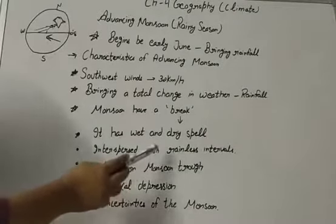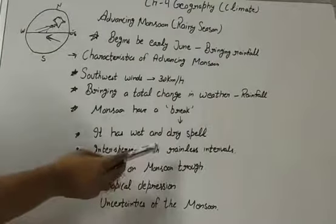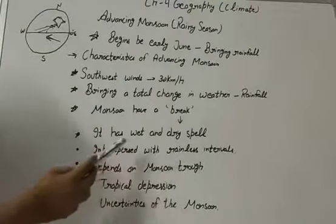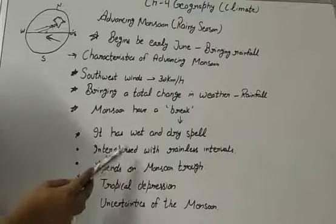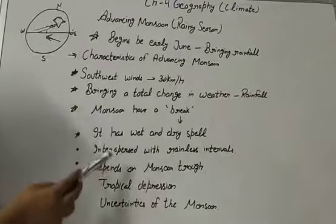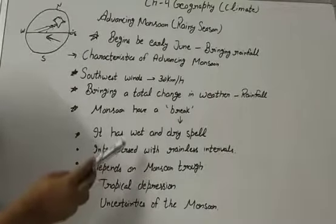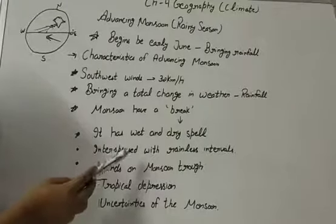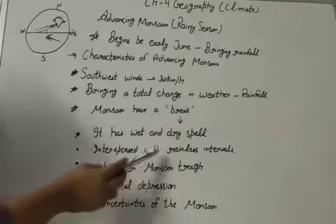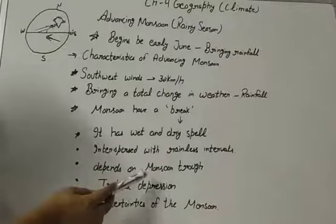These breaks are related to the movement of the monsoon trough, which is the area of low pressure. When the axis of the monsoon trough lies over the plains, rainfall is good in those parts. On the other hand, whenever the axis shifts closer to the Himalayas, there are long dry spells in the plains. Rain then occurs on the mountain areas along the Himalayan rivers.